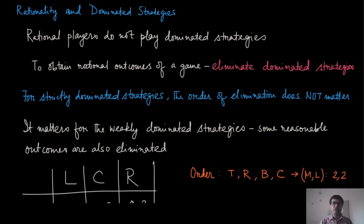A very important question is in which order you should remove the dominated strategies. A player could have multiple dominated strategies, or different players may each have one or more dominated strategies. Turns out that for strictly dominated strategies, the order of elimination does not matter — because it is strict, it is always going to be strictly better to remove the dominated strategy, and you will always end up in the same reduced game.